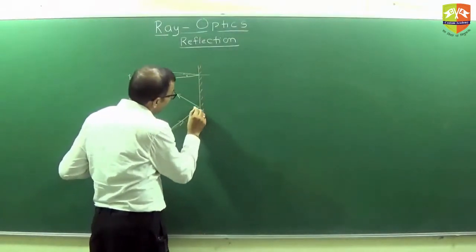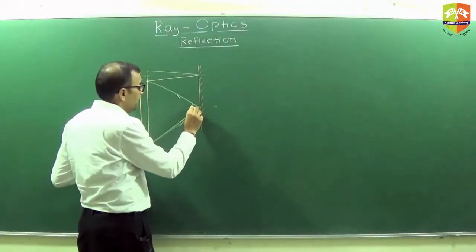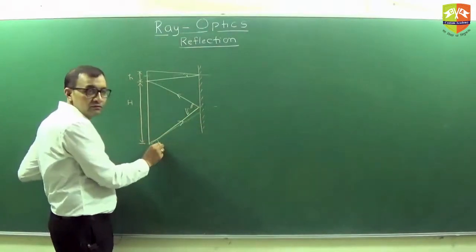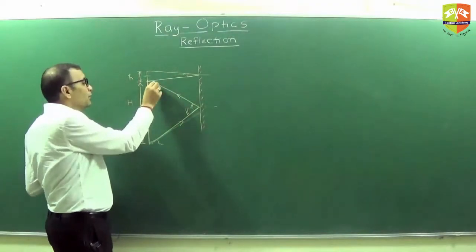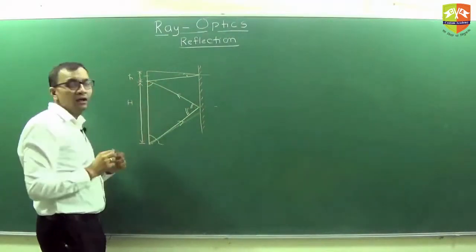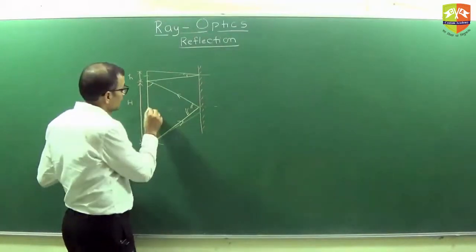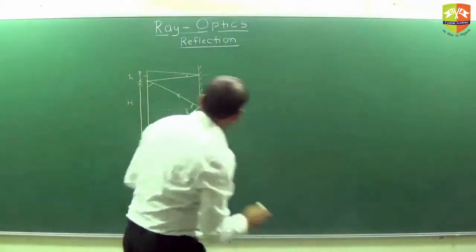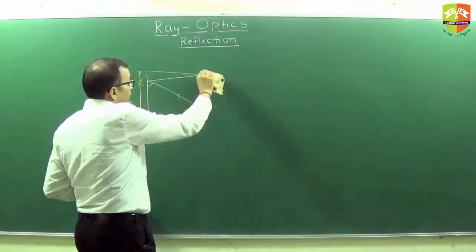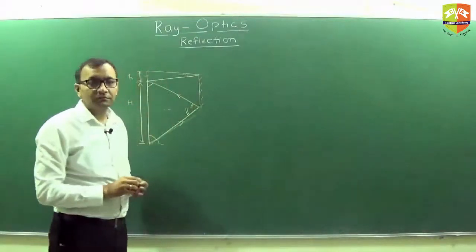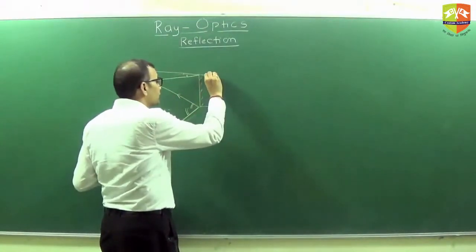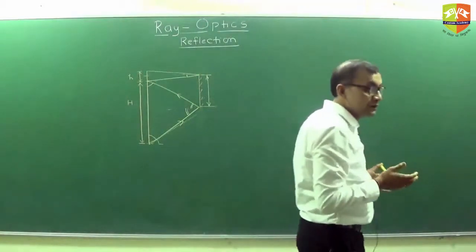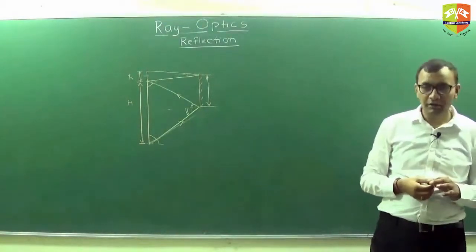If this is the normal, this angle will be equal to that angle, and this angle will be equal to this angle, and this angle will be equal to that angle. So you can make out that this angle will be equal to that angle — it will be an isosceles angle again. So you do not need this much of the mirror; you can do away with the top and bottom portions. This much of the mirror is enough. So you have to find out what this length is — this length is the minimum size of the mirror needed.